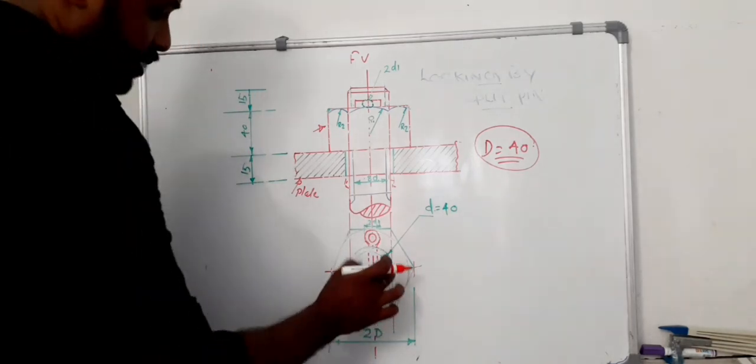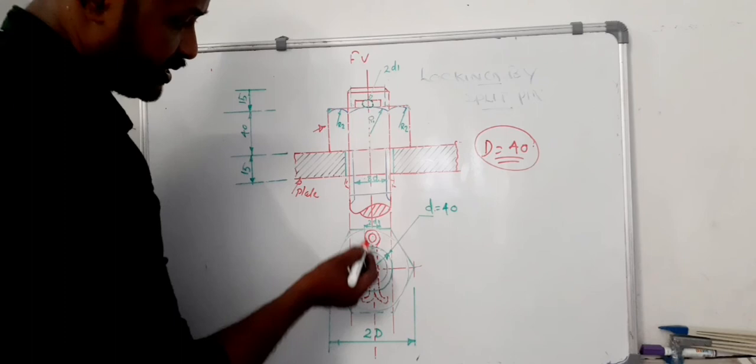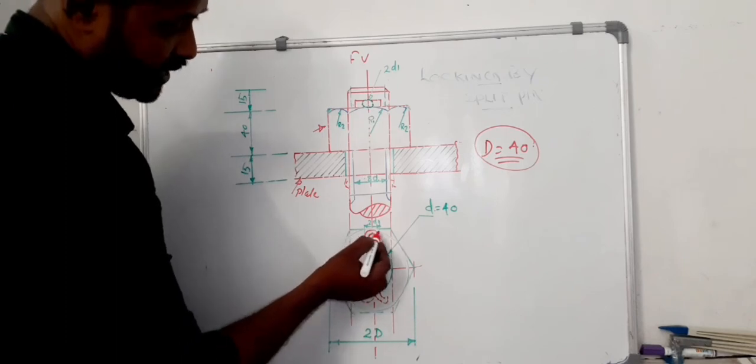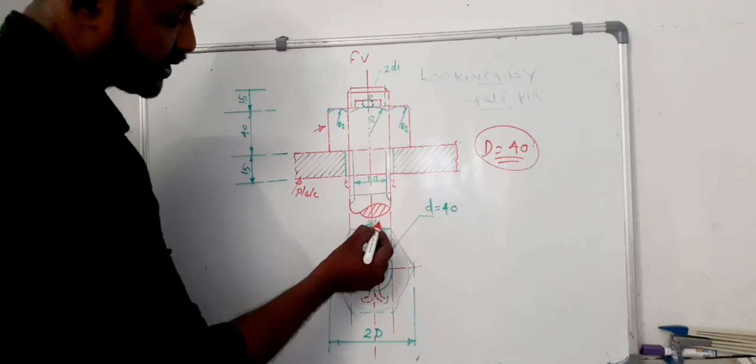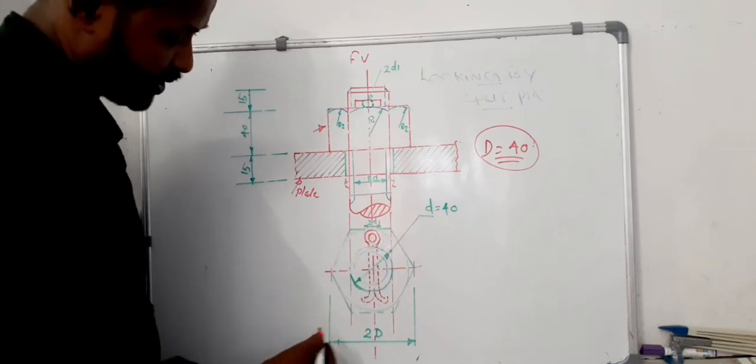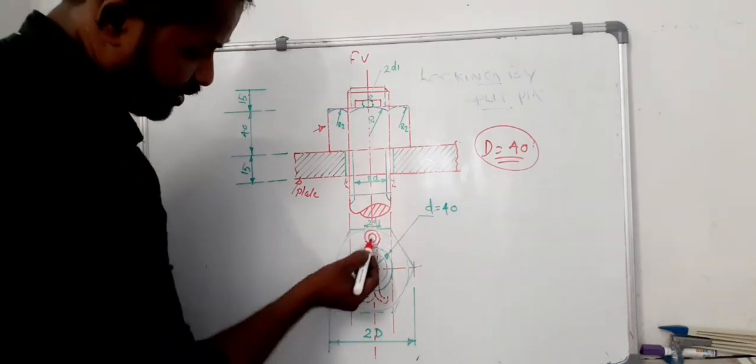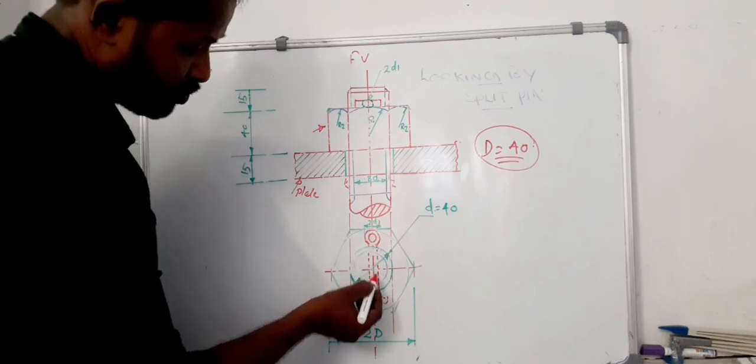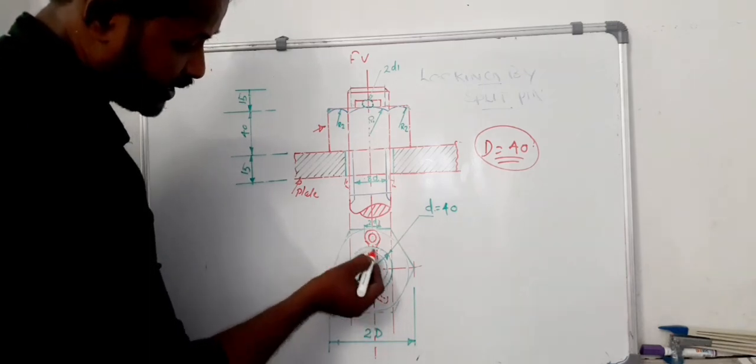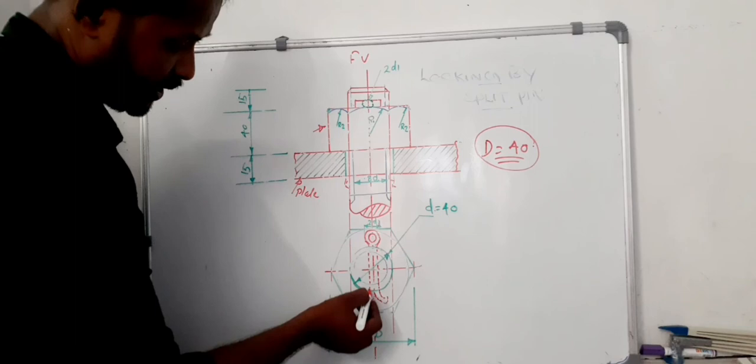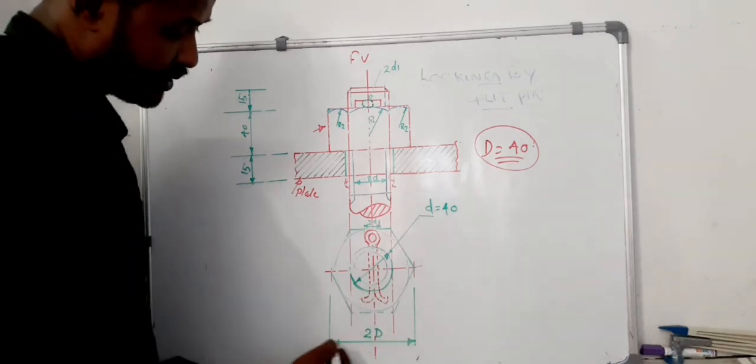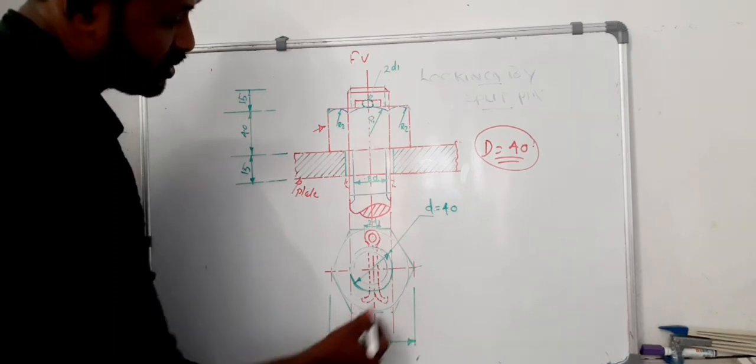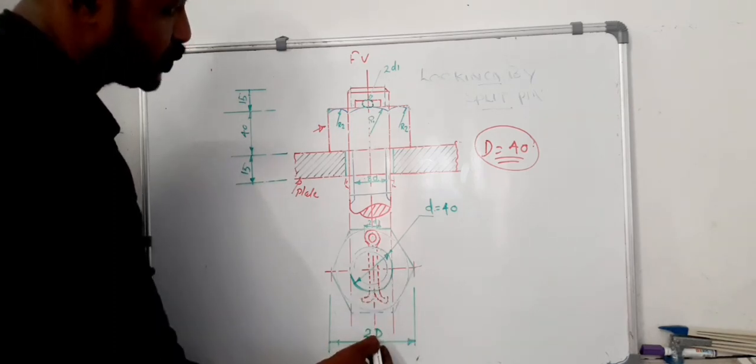From the plan we can understand the head diameter of the split pin is 2D1. The split pin passes through the bolt, and that area is represented by the dotted line. The corner to corner width of the bolt is marked here, that is 2D.